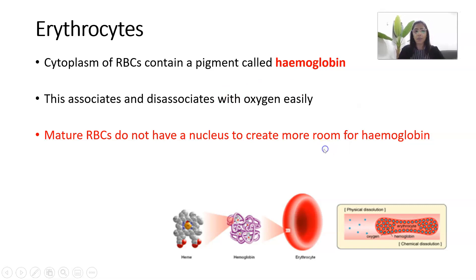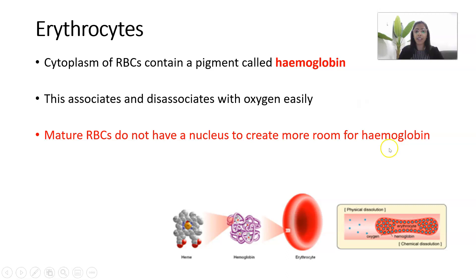An important feature of mature erythrocytes is that they do not have a nucleus, and they lack some other organelles too. The nucleus contains DNA with instructions for repairing the cell, so without it, red blood cells have a shortened lifespan of about 120 days, or four months. The reason they lack a nucleus is to create more room for hemoglobin — since their main function is respiratory gas transport, they sacrifice the nucleus to carry more hemoglobin.